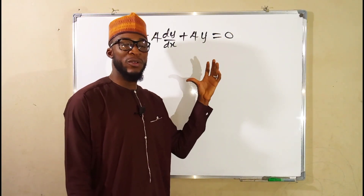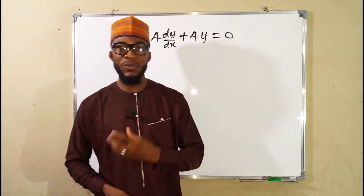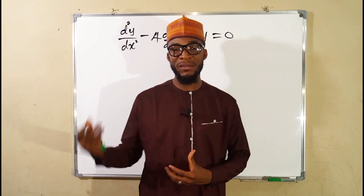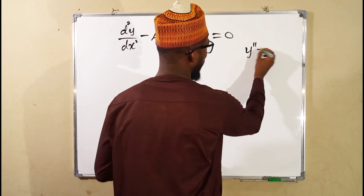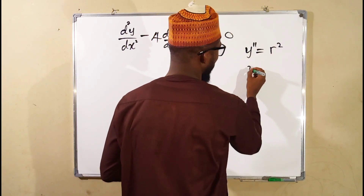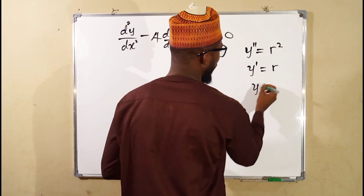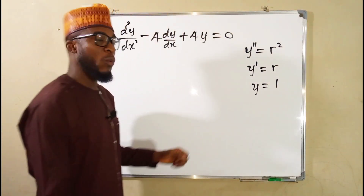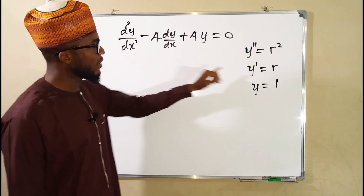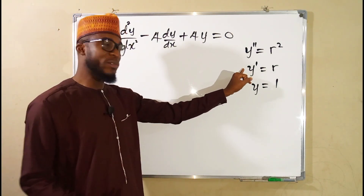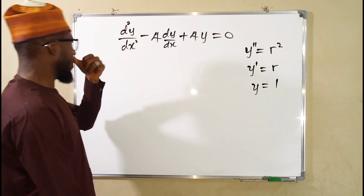We want to solve this second-order linear homogeneous differential equation. Remember, the first thing you need to do is to transform the equation into an auxiliary form, or the characteristic equation, by setting y double prime equal to r squared, y prime equal to r, and y equal to 1. Where y double prime is the second derivative of y with respect to x, y prime is the first derivative of y with respect to x, and y is simply y.